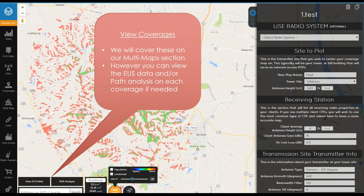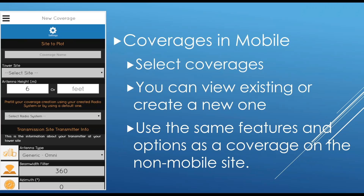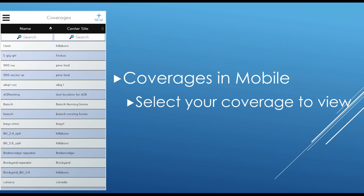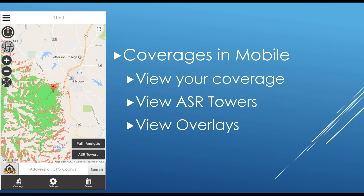We have a View EUS Data button — we'll cover viewing EUS data later, but note you can view any of your EUS data and saved searches from this button. On mobile coverages, you can select your coverage, create a new coverage, and use the same feature set as the main page — select your tower site, select your radio system, change any performance variables as needed. The New button and existing coverage buttons are available, and you can view coverages inside your mobile website.